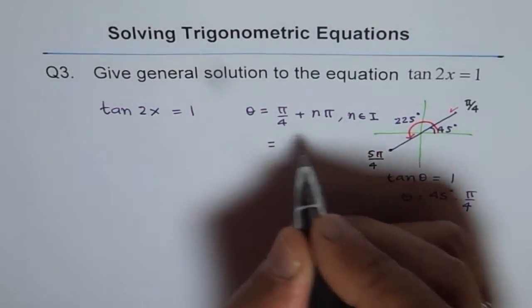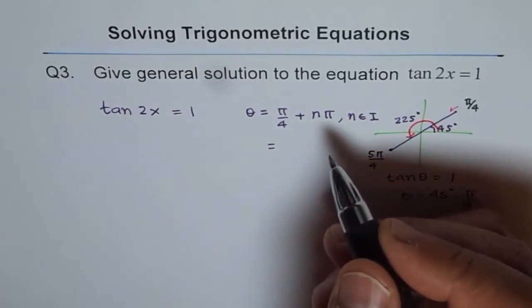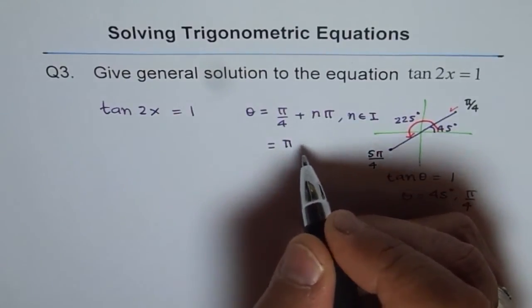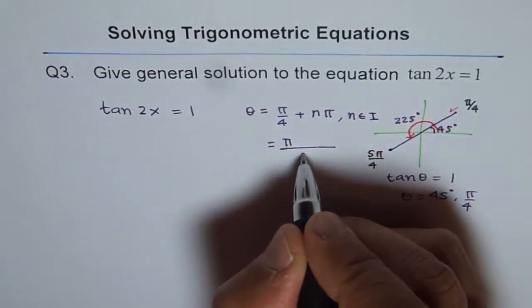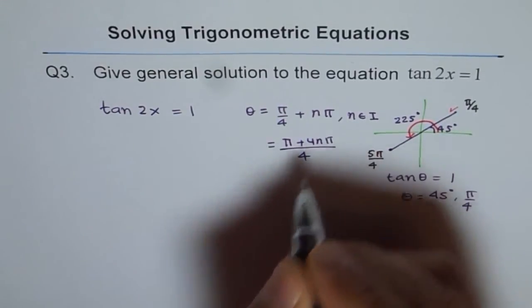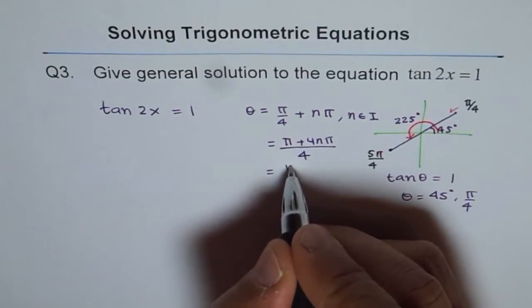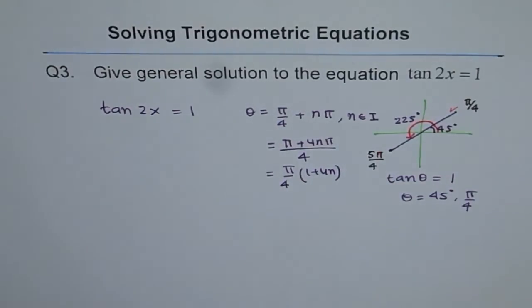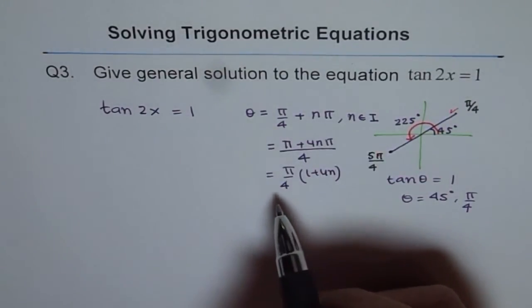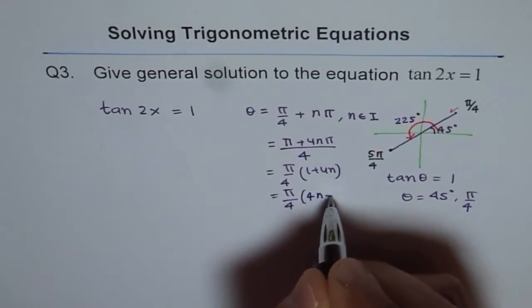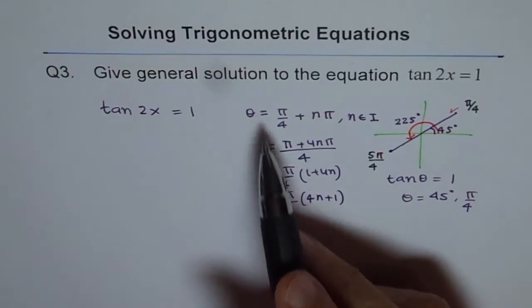And this could be written in general. We can take pi common, for example, and then let's take common denominator of 4, and then what do we get? We get 4n pi plus pi. Which I could write as, I can write pi common, I can write pi by 4, and I can write 1 plus 4n. Like this. So this could be my general solution for theta. So let me write it as pi by 4 times 4n plus 1. So that is a general solution for theta.